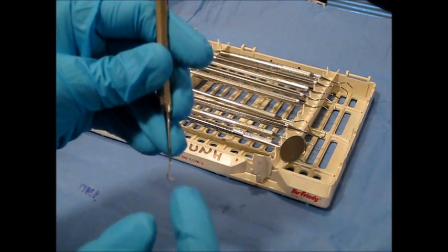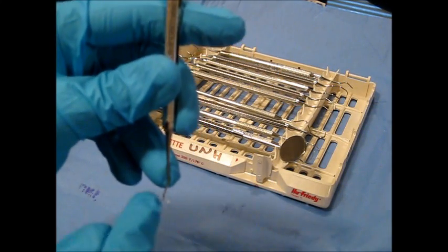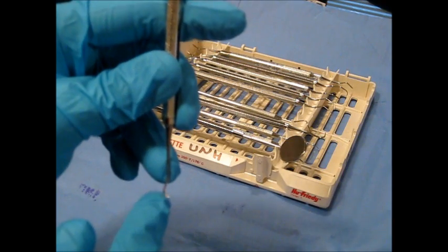It has a triangular cross section with a pointed tip end and a 90 degree angle from its face to the terminal shank.